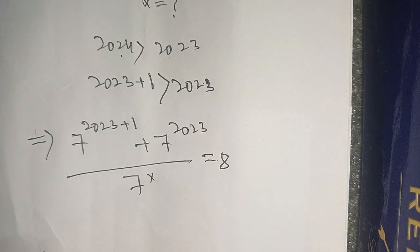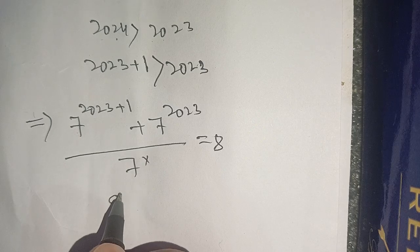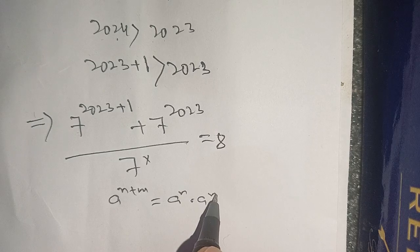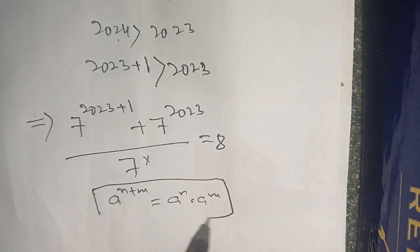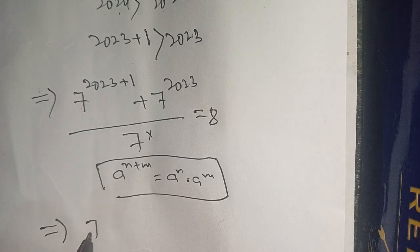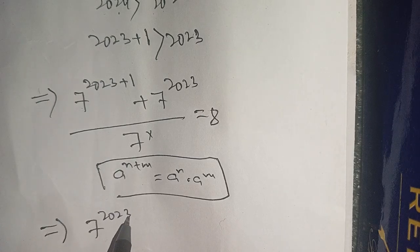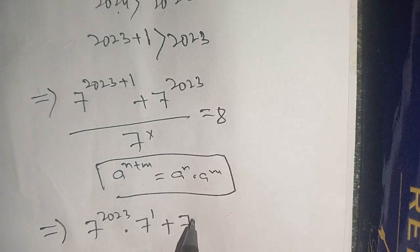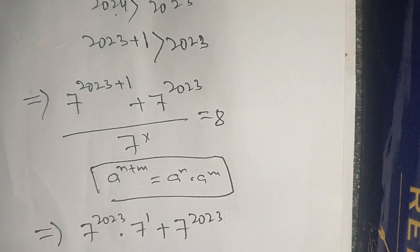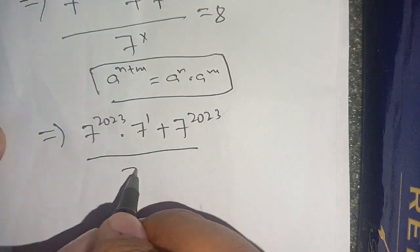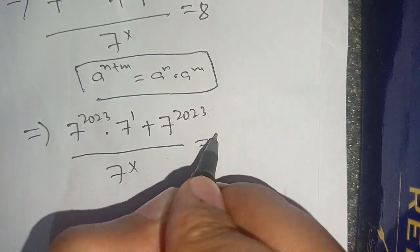In the next step, we know that if a power n plus m, it is equal to a power n times a power m. Using this identity, we get 7 power 2023 times 7 power 1 plus 7 power 2023 divided by 7 power x is equal to 8.